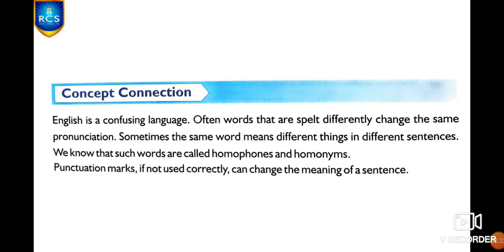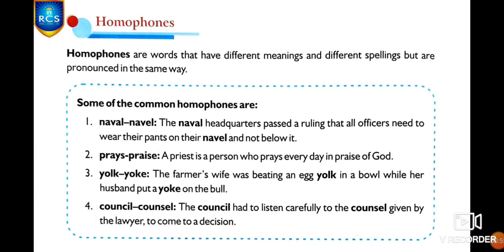English is a confusing language and often words that are spelled differently share the same pronunciation. Sometimes the same word means different things in different sentences. Such words are called homophones and homonyms. Similarly, punctuation marks, if not used correctly, can change the meaning of a sentence. First, we are going to learn about homophones — words that have different meanings and different spellings but are pronounced in the same way.